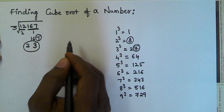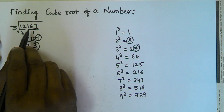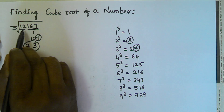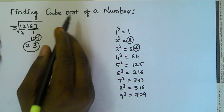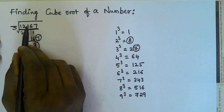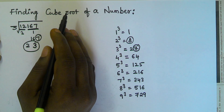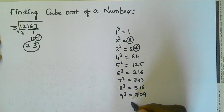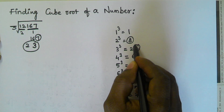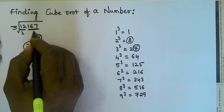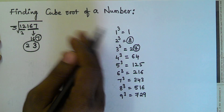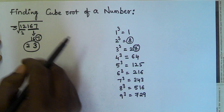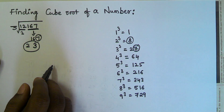Three steps are involved. First, divide the given number into parts starting from the rightmost, each part containing three digits — 167 is one part and the remaining digits are the other part. Second, take the rightmost part 167, look at the last digit 7; since 3 cube ends with 7, we take 3. Third, for the left part 12, the maximum cube we can subtract is 8 (2 cube), so we take 2. The cube root of 12167 is 23.